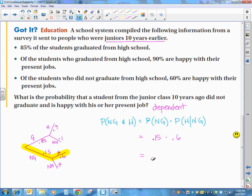When you multiply those together, you get 0.09, which is 9%. So that sums up conditional probability.